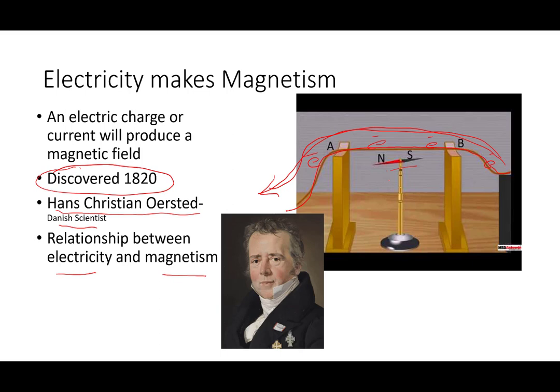When he turned the current off, the needle went back pointing towards magnetic north. He turned the current back on and it changed directions to go around this current carrying wire. So he realized these two things, electricity and magnetism, they are sort of like two sides of the same coin. They are very closely and intimately related. A magnetic field is going to be produced whenever you have a current carrying wire or an electric charge like an electron or a proton is in motion.